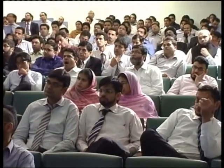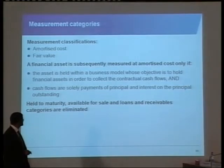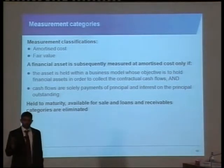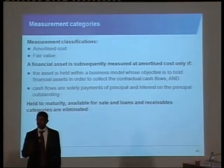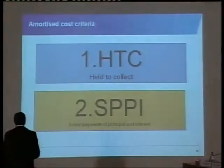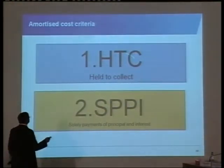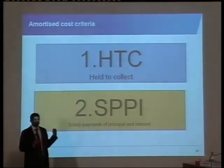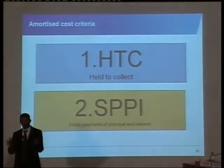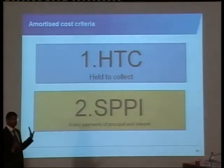This business model thing — how do you decide business model? The second category or criteria relates to the instrument. It's got to be solely payments of principal and interest. If the payment is more than principal and interest, you are not at amortized cost. We technical people like acronyms. The first criteria I call 'held to collect' (HTC) and the second is SPPI — solely payments of principal and interest. If you go through those two, you can use amortized cost.